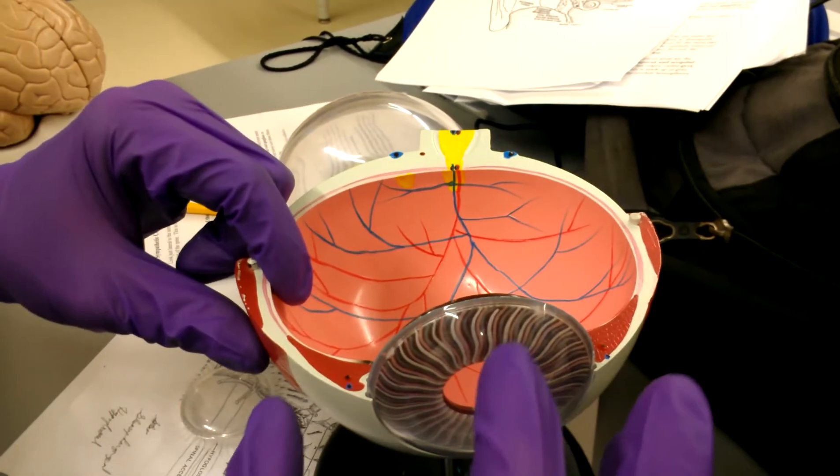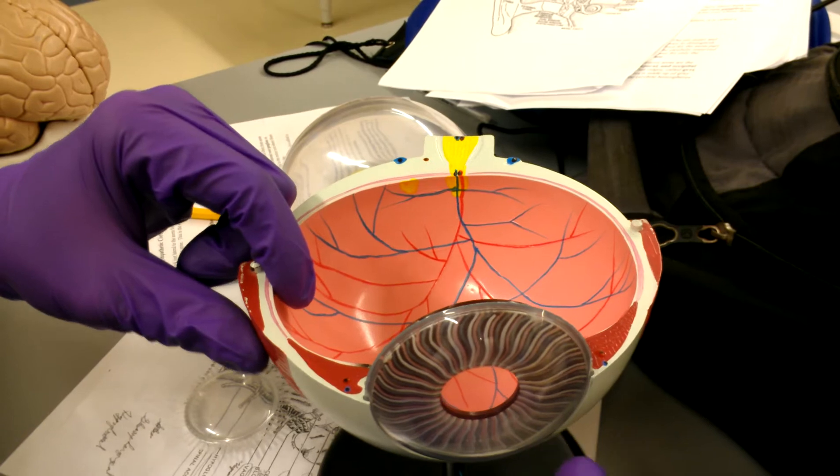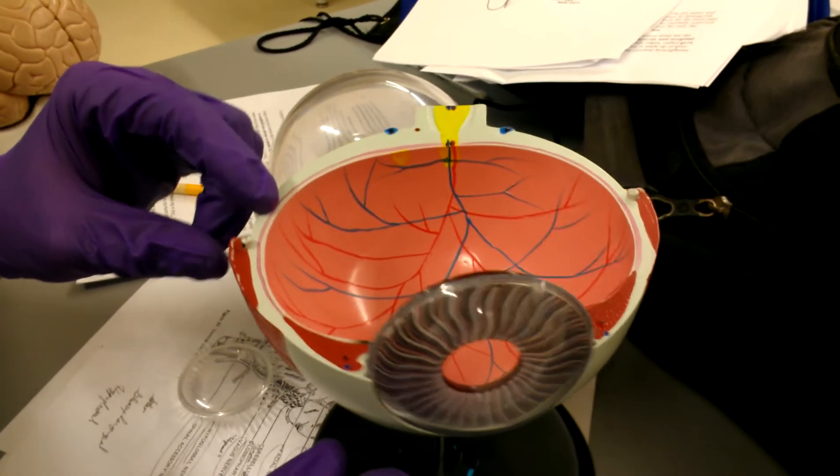The colored part right here in the middle is the iris and then the middle part there that's hollow is the pupil.